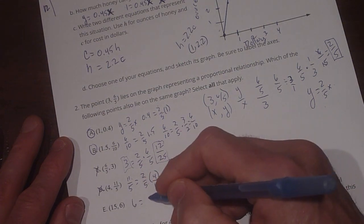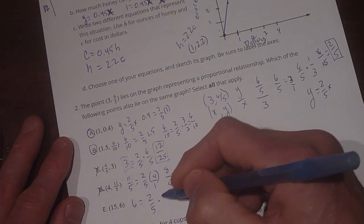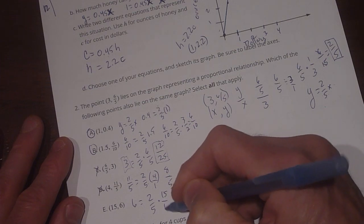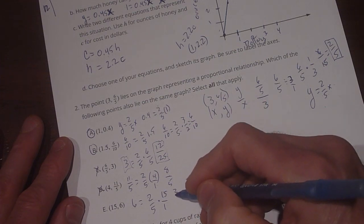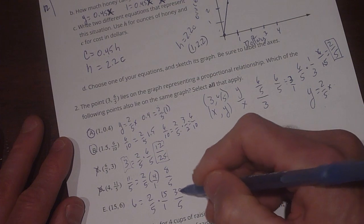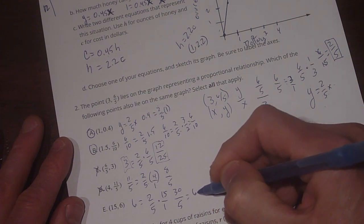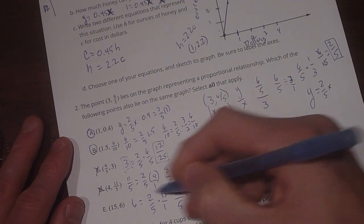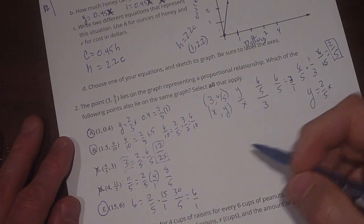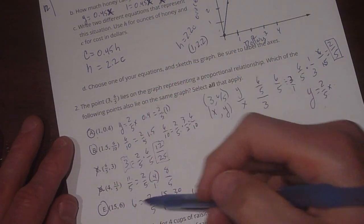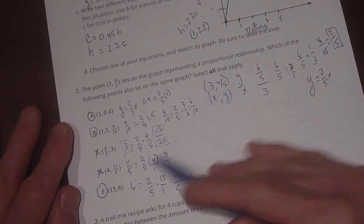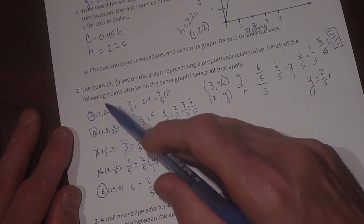And then 6 equals 2 fifths times 15, and that's 15 over 1, so 2 times 15 is 30 over 5. 30 fifths equals 6 wholes, or 6 over 1, and that equals that. So E does work out also. So A, B, and E are our points that are on that line.